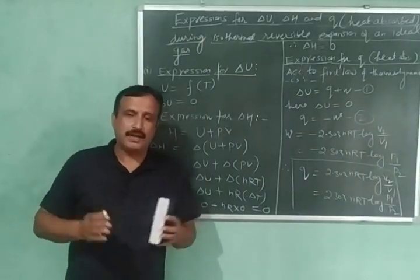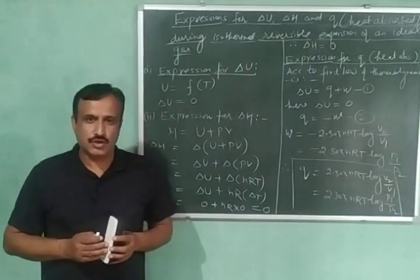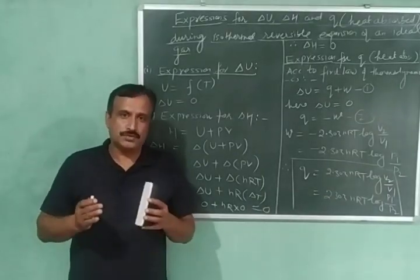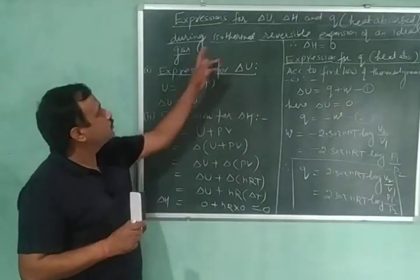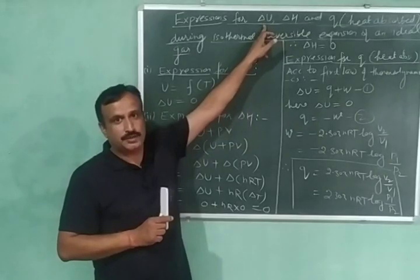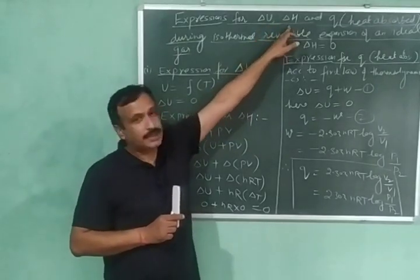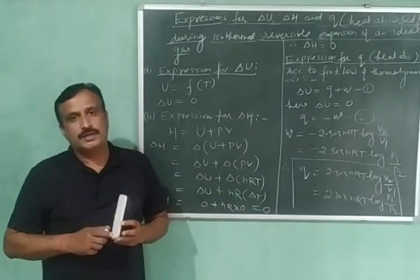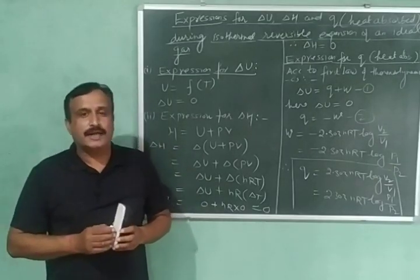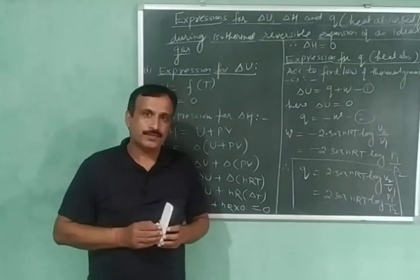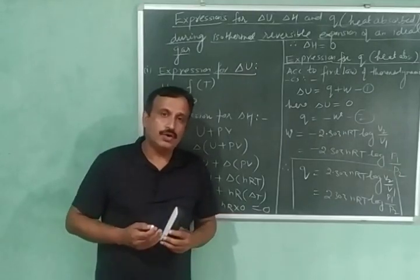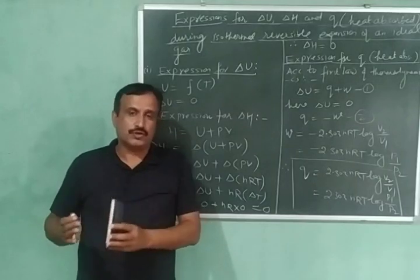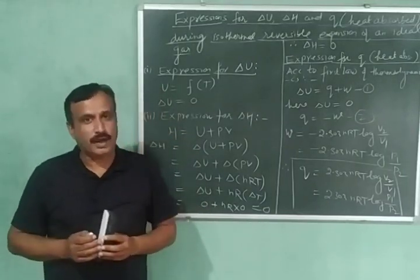Hello everyone, welcome back and you are watching DMG Chemistry Classes. In today's video I am going to discuss some expressions for delta U (change in internal energy), delta H (change in enthalpy), and Q (heat absorbed) during isothermal reversible expansion of an ideal gas. In my previous video we derived the expression for work done during the isothermal reversible expansion of an ideal gas.